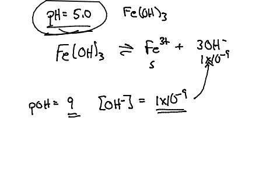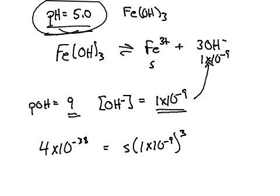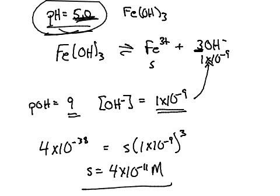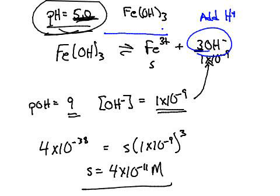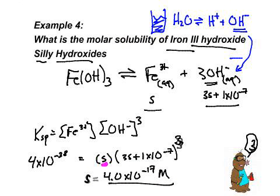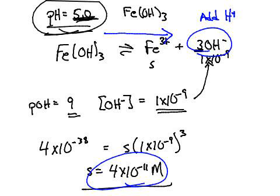So you would say this is S, and this is 1 times 10 to the minus 9th. When you solve your problem, you'd use your KSP expression, which was 4 times 10 to the negative 38. That equals S times 1 times 10 to the minus 9th cubed. You just divide by 1E to the minus 9th cubed, and you get 4 times 10 to the negative 11. So by changing the pH, by lowering the pH, you have more hydrogens, which shifts the equilibrium to the right because we're taking the hydroxides away.